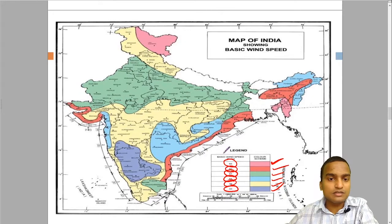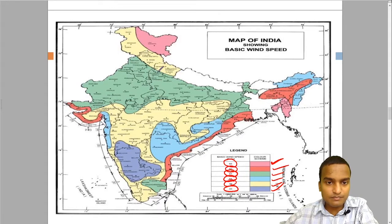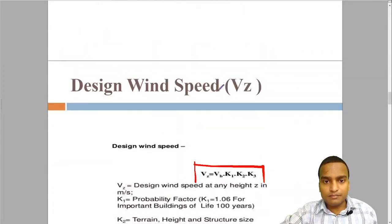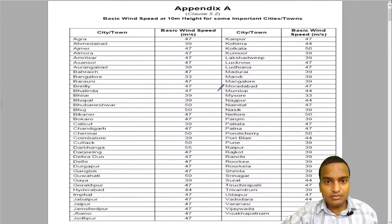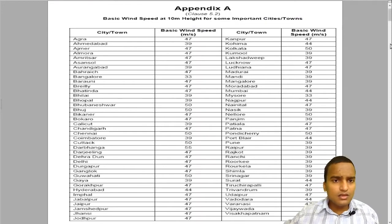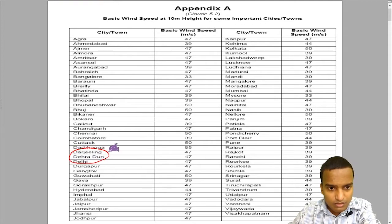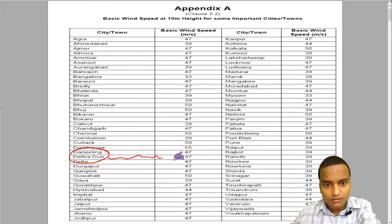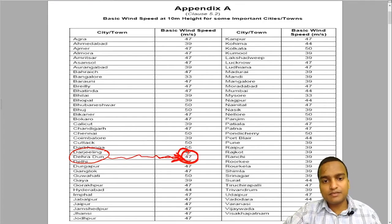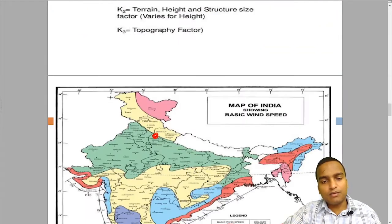If you locate your own city Dehradun, it comes almost near the yellow and green horizon. If we are confused, we can go directly to the table. The table is also provided in appendix A, which provides basic wind speed for some important cities and towns. Here it is Dehradun, and for Dehradun the wind speed is 47.